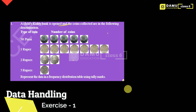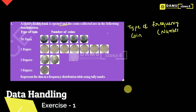So here we will write tally marks and type of coin. First write type of coin, then frequency — that is number of coins — and then the tally marks. You can also write frequency after tally marks, no problem.